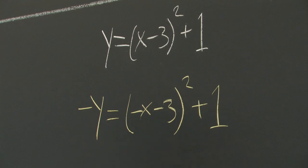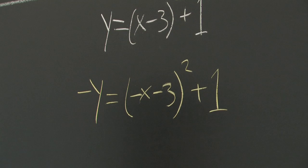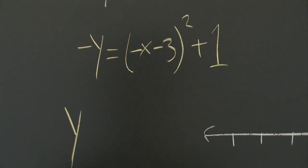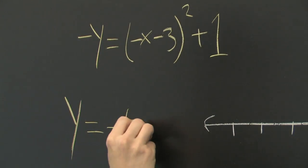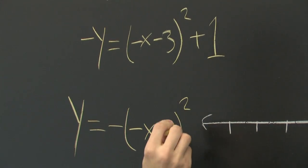And if you want to, you can simplify this by dividing both sides by negative 1. So you are left with just y on the left side: y equals negative (x minus 3) squared minus 1.